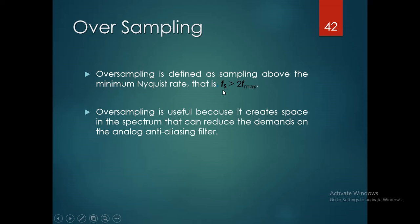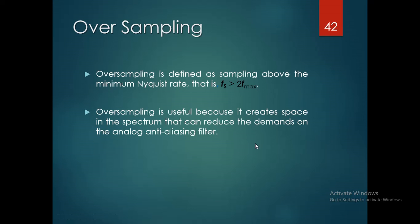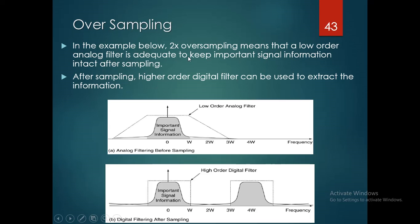Over-sampling, or power sampling, is another type of sampling where the sampling frequency is greater than 2·Fm (the maximum frequency). Power sampling is defined as sampling above the minimum Nyquist rate. It is useful because it creates a space between spectra, which reduces the demands on the analog anti-aliasing filter. An analog filter is required to keep important signal information intact after sampling, and then a higher-order digital filter can be used to extract the information.